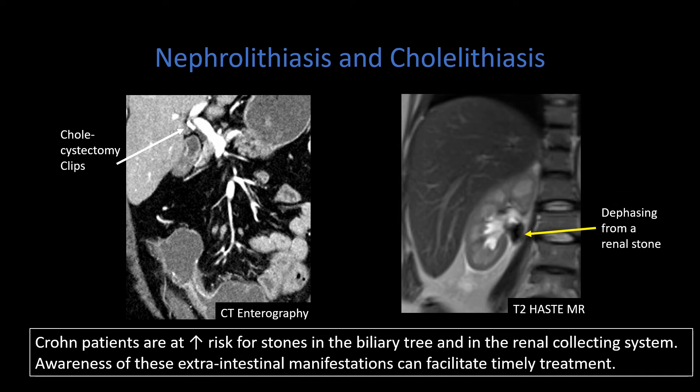Nephrolithiasis and choledocholithiasis — we can detect them. It's a little harder to detect a kidney stone on MRE than on CTE, but they're the same things you're looking for in any other patient. It's just a matter of remembering that these are of higher incidence in patients with Crohn disease and remembering to go look for them.